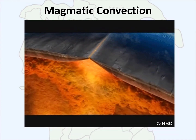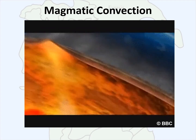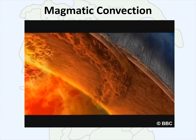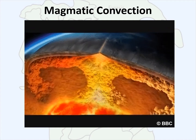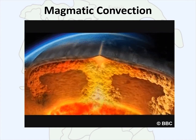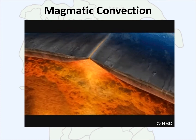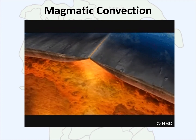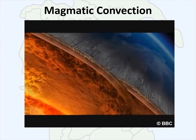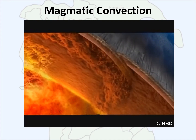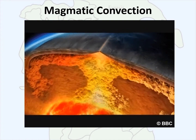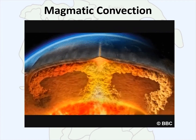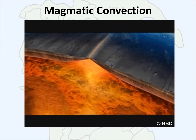On this slide we have the process of magmatic convection, where superheated, super dense magma is rising to the surface and as it rises it spreads out. As it spreads out away from that center point of heat it will cool and gain density and then be pulled back down into the mantle and destroyed. This exchange of density and temperature is what's referred to as magmatic convection.